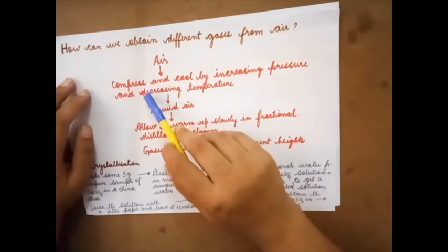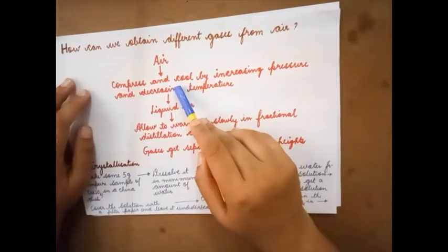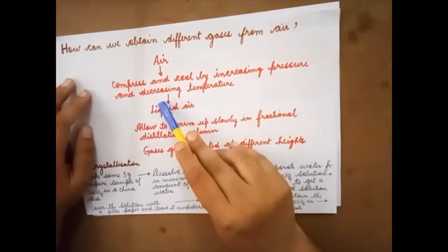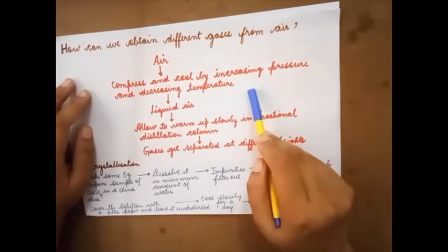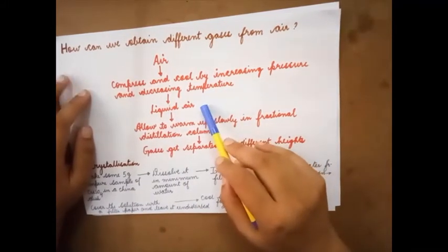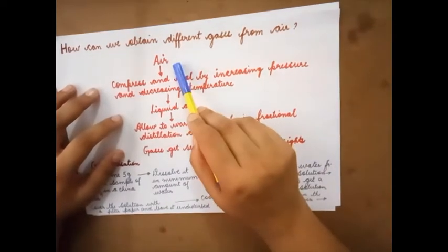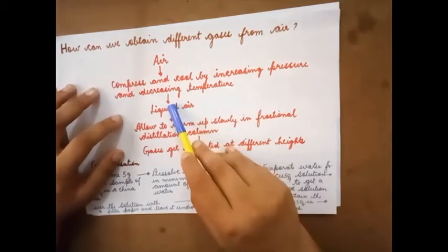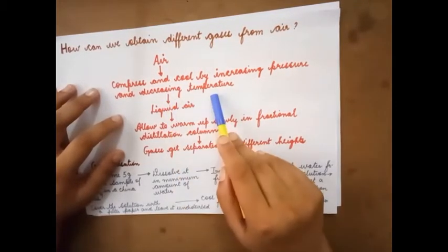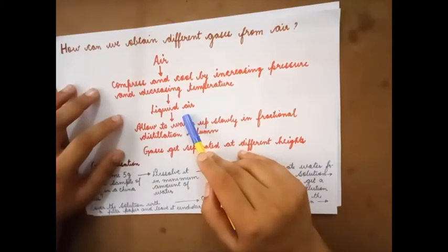Air is compressed and then it is cooled by increasing pressure and decreasing temperature. The air is getting converted to liquid. This is in a gas form and slowly by increasing pressure and decreasing temperature it is getting converted to liquid.